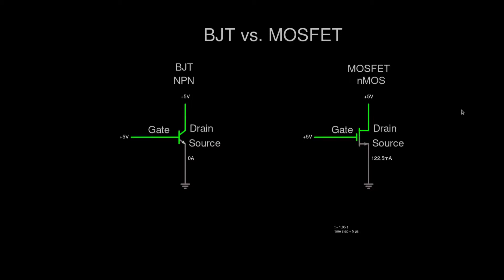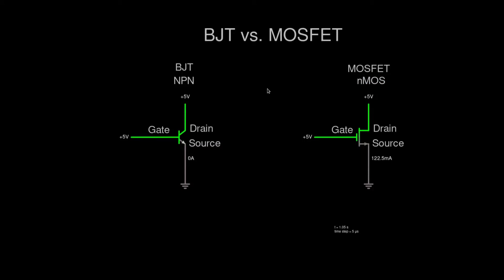On the right side we can see a MOSFET — to be exact an NMOS transistor — and on the left side we can see a BJT or NPN type transistor. The NPN acts like NMOS as a normally open switch, and PNP and PMOS act as a normally closed switch. BJT means bipolar junction transistor; MOSFET means metal oxide semiconductor field effect transistor. We are going to compare the NPN and the NMOS transistors.